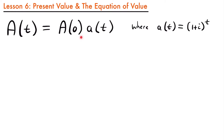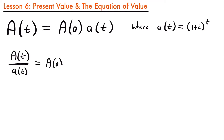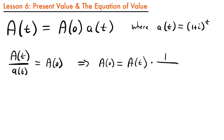Let's take this equation and solve for this initial deposit value. If we solve for that, we would divide both sides by our accumulation factor. So we'll have the accumulation at time t divided by the accumulation factor, equal to that initial deposit at time equals zero. Then we can rewrite this: the accumulation at time zero is equal to the accumulation at time t times one over the accumulation factor — one plus i to the t power.